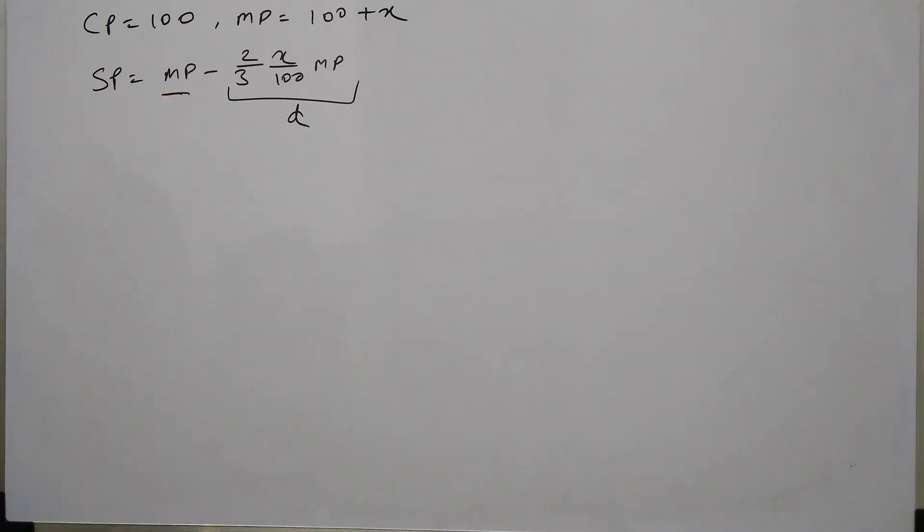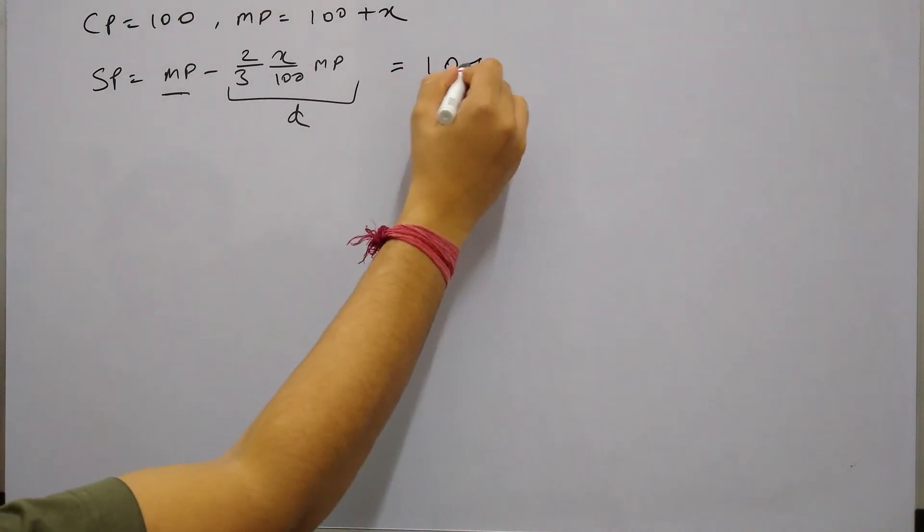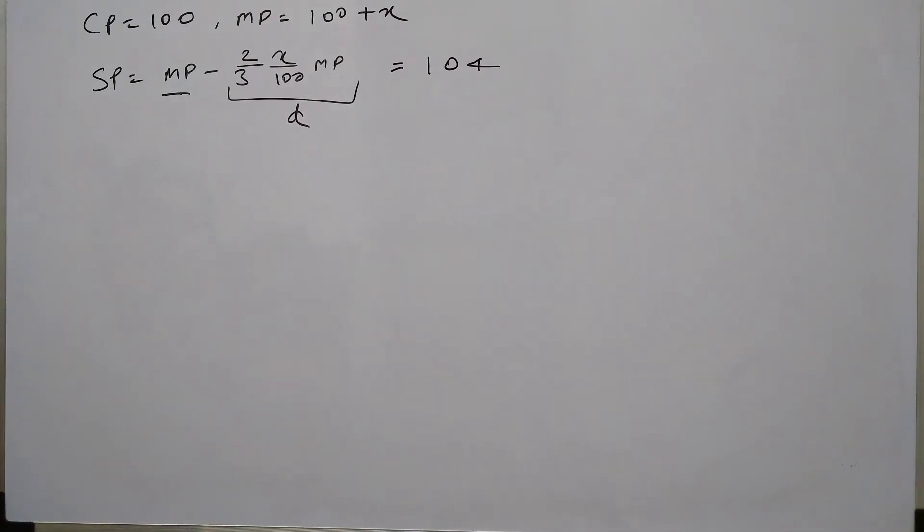So at this price this article is being sold, which gives a profit of 4% on cost price. So cost price is 100 and profit is 4 rupees on this. So the selling price will be 104.